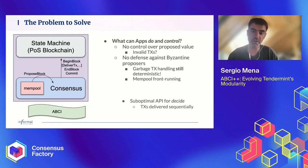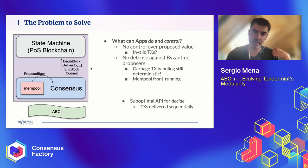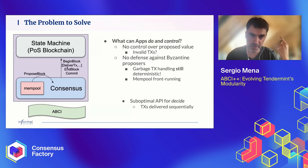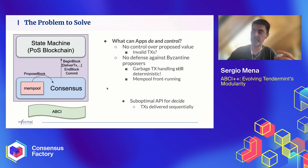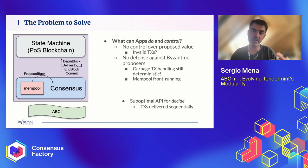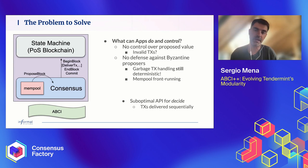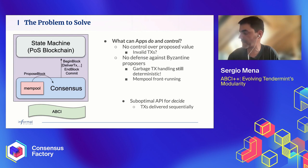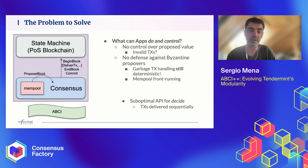Less important but worth mentioning: the implementation of Decide is suboptimal because transactions are delivered with DeliverTX — one transaction per call — delivered sequentially. These are the main problems that have appeared over the years when using ABCI, and these are the main motivations for us to undertake the work called ABCI++, which is a codename for the next generation of ABCI.